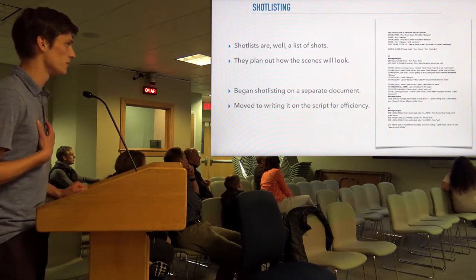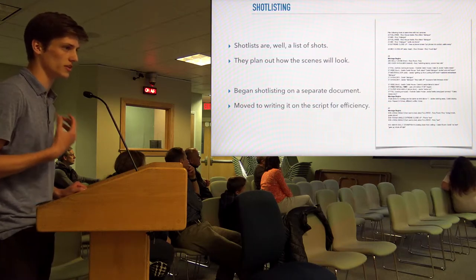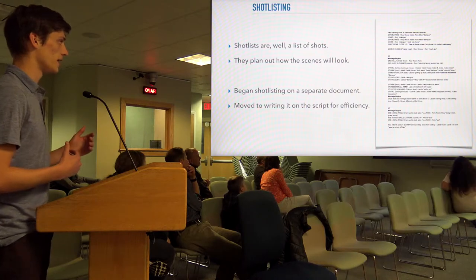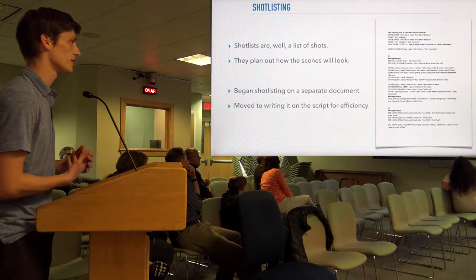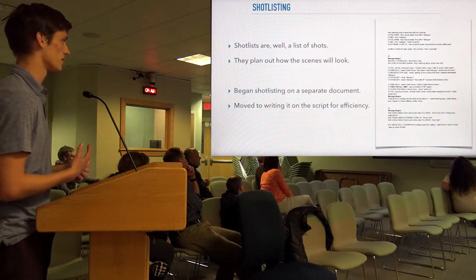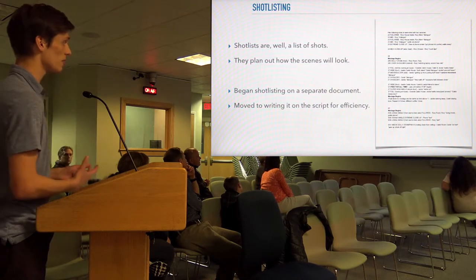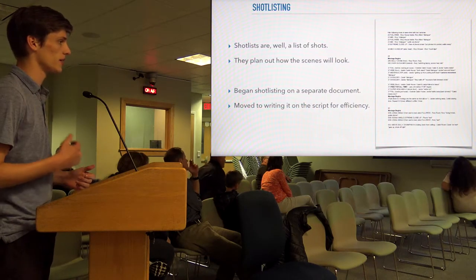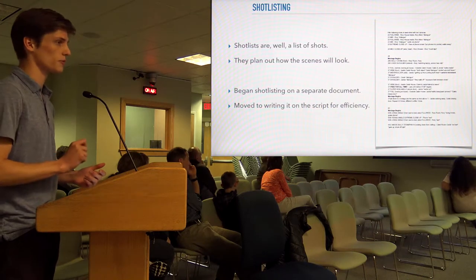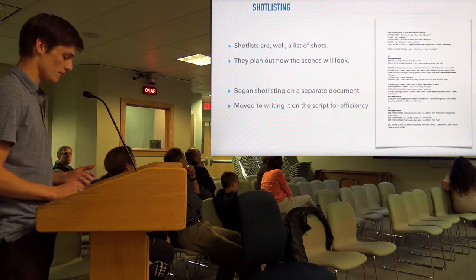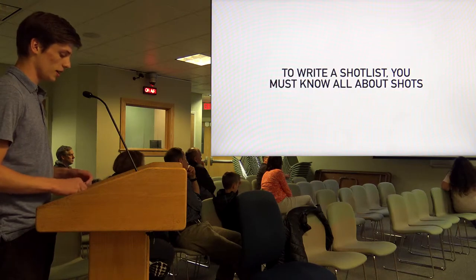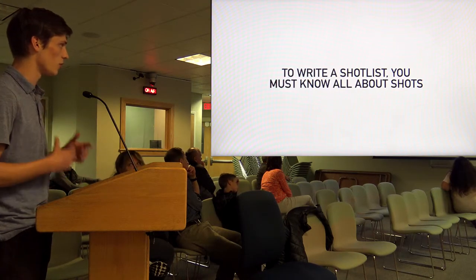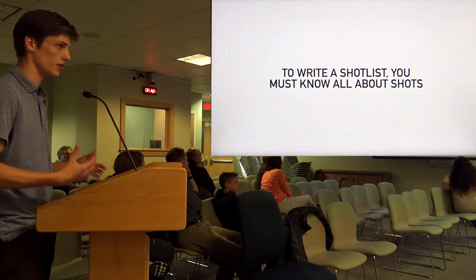Then I moved into shot listing — listing the shots you want to take before you actually film. I didn't know much about this before; I'd done a little bit but nothing as in-depth as how they actually do it on a real set. I shot listed on a separate document, but eventually moved to writing it directly on the script because I was running out of time. I'm going to go over shots with you from films because you need to know what kind of shot you want and how you want a scene to look.